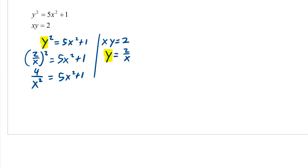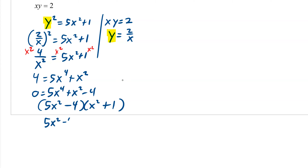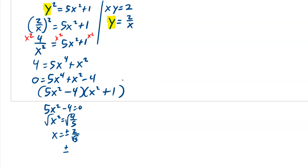We've already plugged it in. Now we multiply everything by x squared to clear the fraction — remember, x cannot be 0, which we already knew because it's a rational function with a vertical asymptote there. We end up with 4 equals 5x to the 4th plus x squared. Set it equal to 0 and factor: this is 5x squared times x squared, so the factored form gives 5x squared minus 4 equals 0 and x squared plus 1 equals 0. For 5x squared minus 4 equals 0: x squared equals 4 fifths, so x equals plus or minus 2 over radical 5. For x squared plus 1 equals 0: that gives x squared equals negative 1, which has no real solution, so we cross it off.